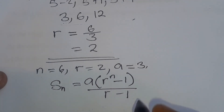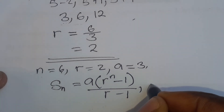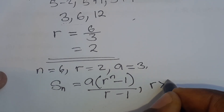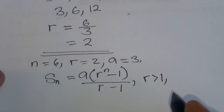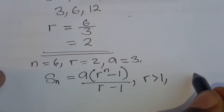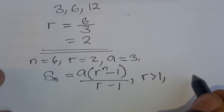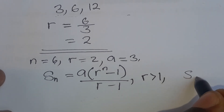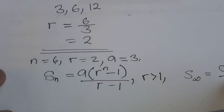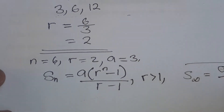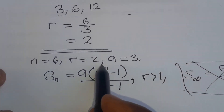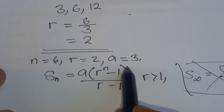This formula is valid when R, the common ratio, is greater than 1. If R were less than 1, we would use the sum to infinity formula: S_infinity equals A over 1 minus R. But since our R is 2, which is greater than 1, we use the finite sum formula.